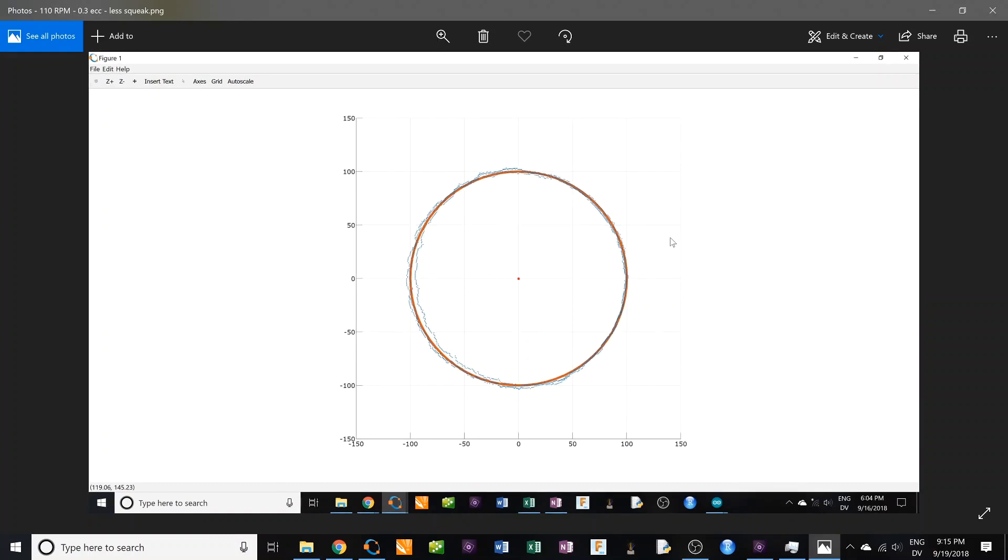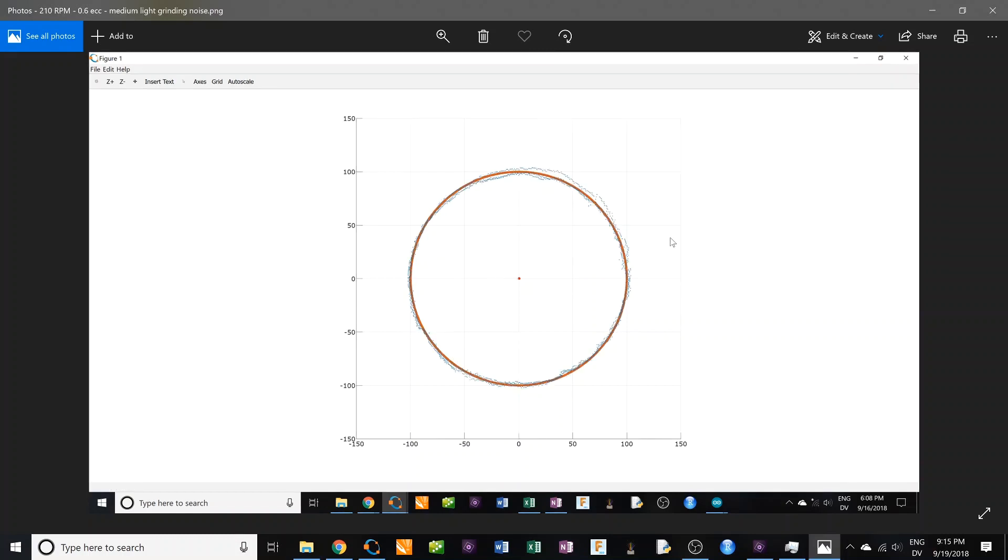Crank it up to 110 RPM. As expected it goes down. The eccentricity is exactly the same. And it looks great. It's definitely better than the other one. 210 RPM, not a lot of difference. A little bit more jumping around in some areas. I guess it's a bit... no, I'm sticking to it. Not much difference.